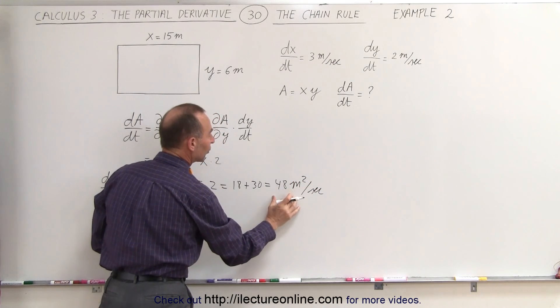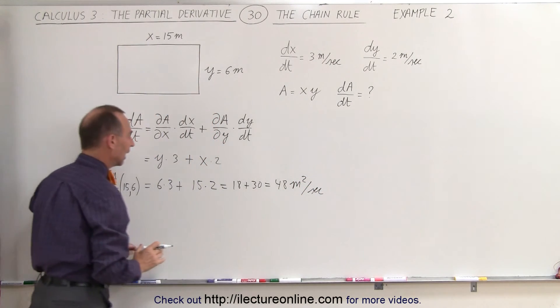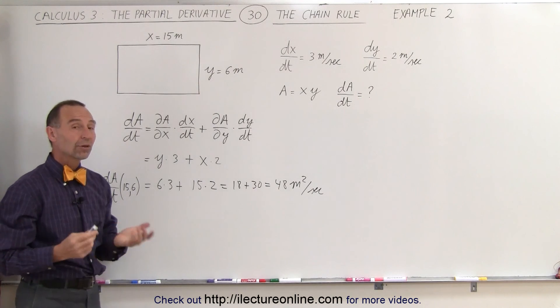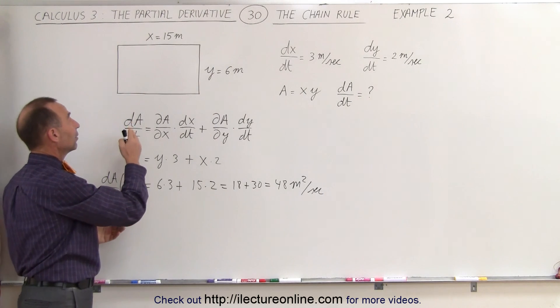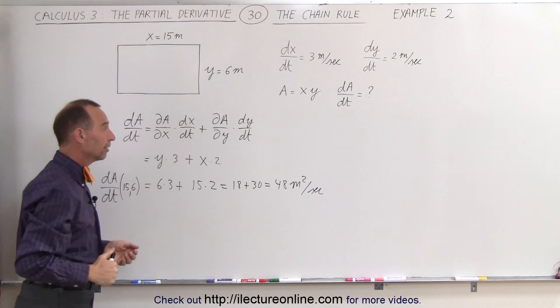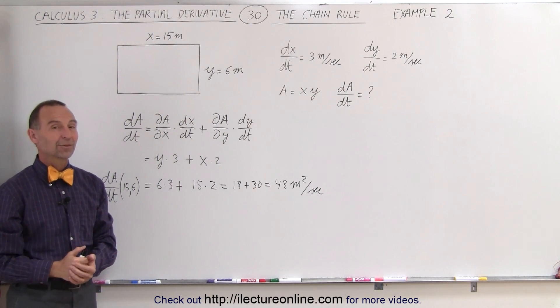The area is changing by 48 meters squared per second, and that is how we use partial derivatives to come up with things that depend on variables which themselves depend upon another variable. And that's how it's done.